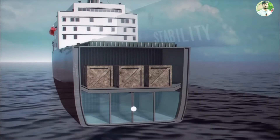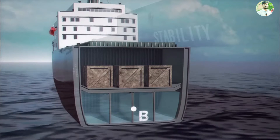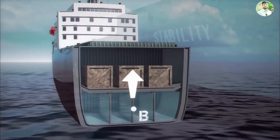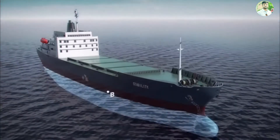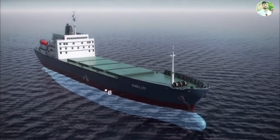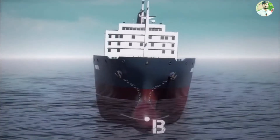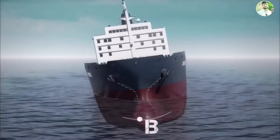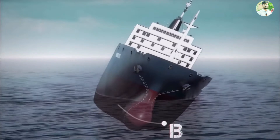The center of buoyancy, or B, is the single point where the upward force of buoyancy acts. It is located at the geometric center of the displaced volume — the area of hull beneath the waterline. When the ship rolls in the water, the shape of the area beneath the waterline changes, and the center of buoyancy is constantly moving.